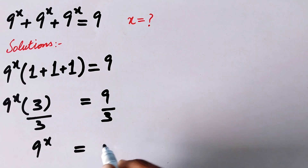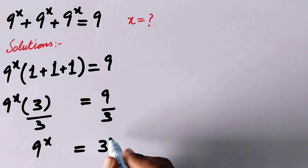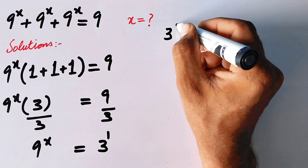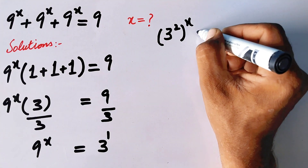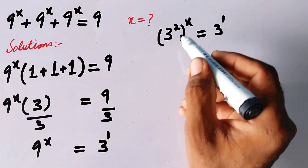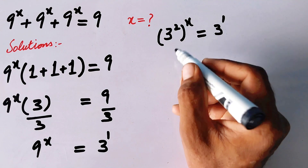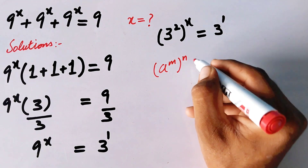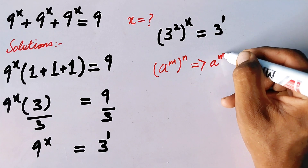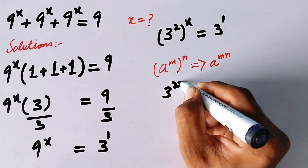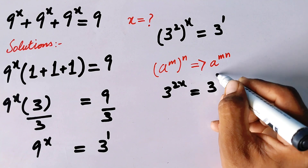So 9 divided by 3 equals 3, meaning 9^x = 3, which we can write as 3^1. Now, since 9 = 3², we write 3^(2x) = 3^1. By the exponential rule, (a^m)^n can be written as a^(m·n), so the above value becomes 3^(2x) = 3^1.